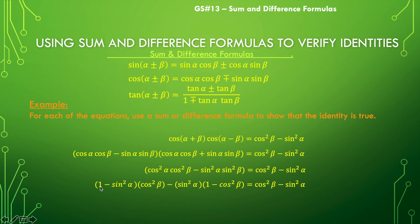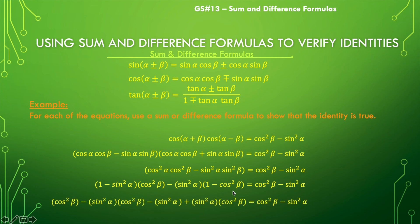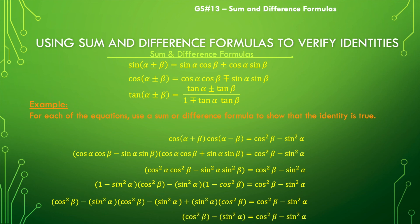After distributing, this becomes cosine squared beta minus sine squared alpha cosine squared beta, then subtract sine squared alpha, and add sine squared alpha cosine squared beta. Looking closely, I notice I have sine squared alpha cosine squared beta appearing once as positive and once as negative — those two pieces negate each other. I'm left with just cosine squared beta minus sine squared alpha, which is exactly what I want.